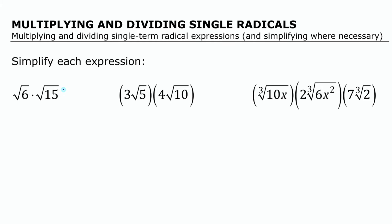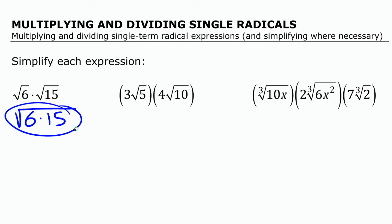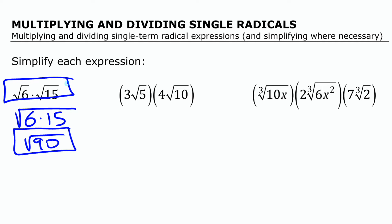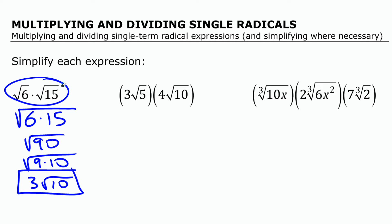As you likely know from working with simplifying radicals, two separate radicals multiplied, you can write as a single radical under one radical sign. So square root of 6 times square root of 15, you can write as square root of 6 times 15, which is square root of 90. We can simplify this as a mixed radical: 90 is 9 times 10, so we can write it as 3 root 10. That's the simplest form.